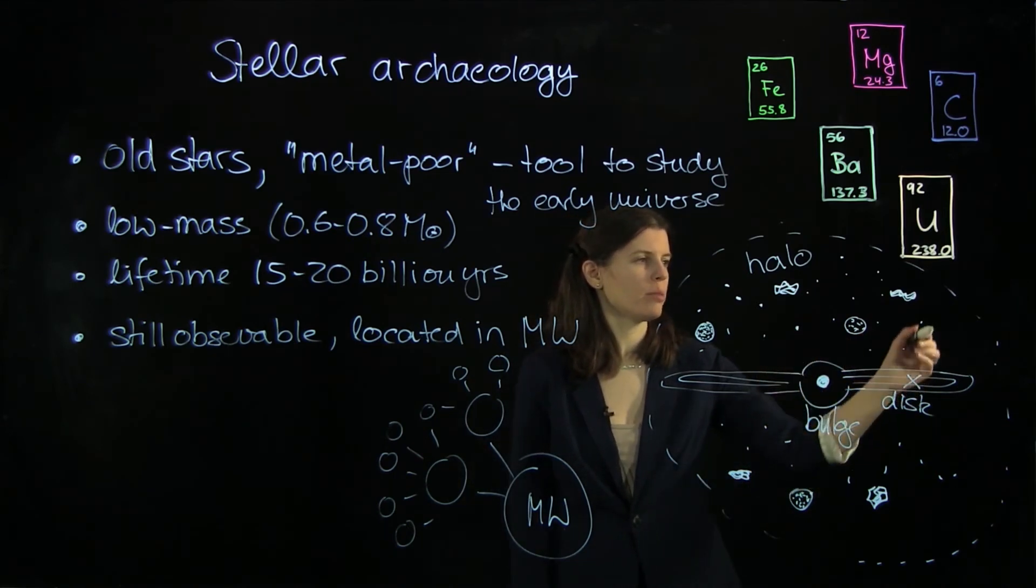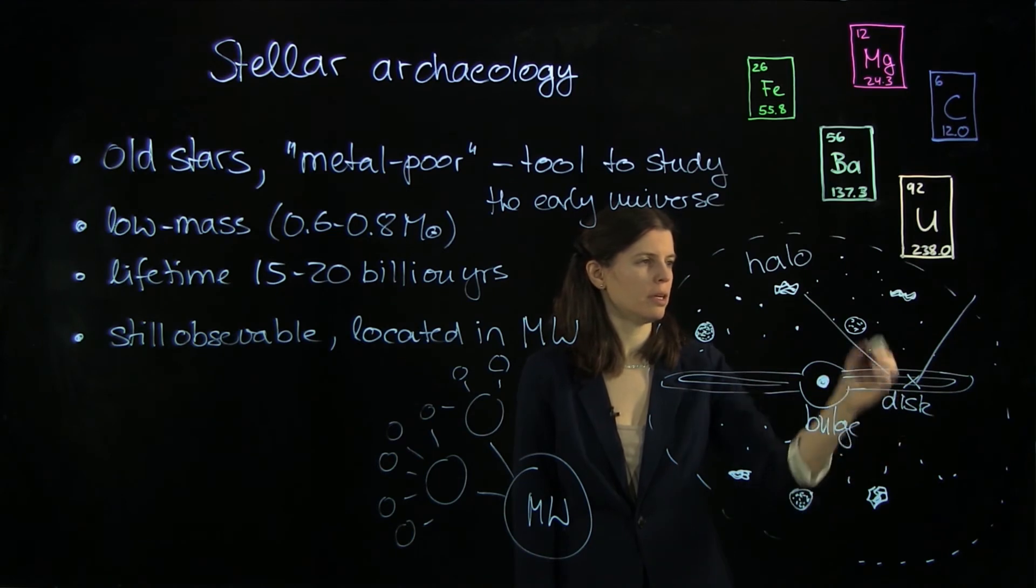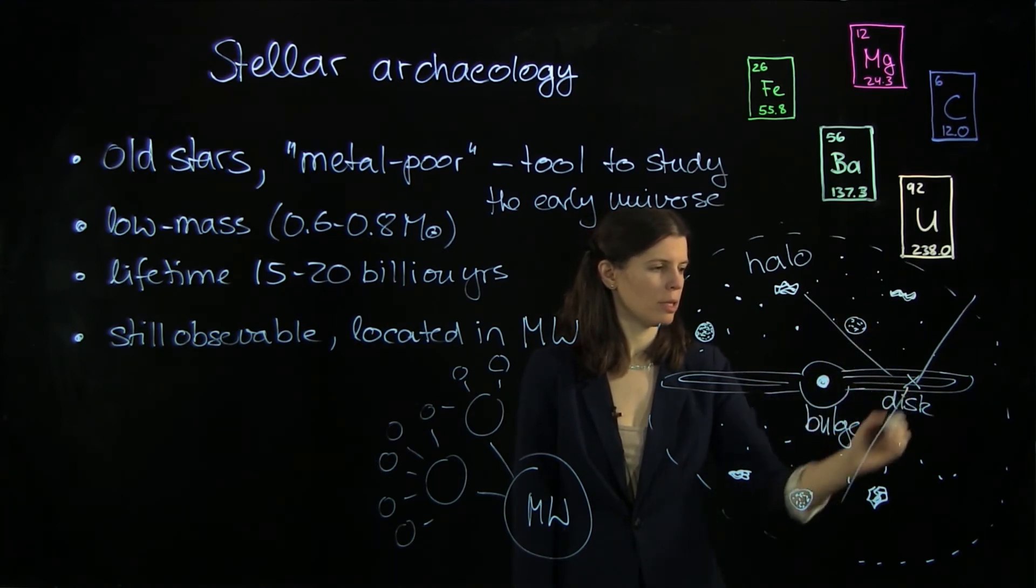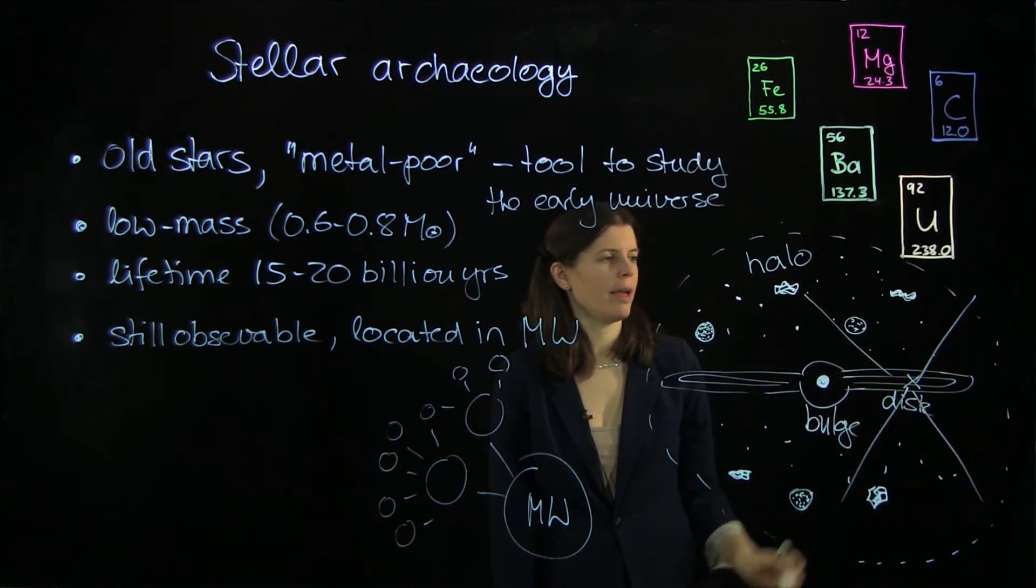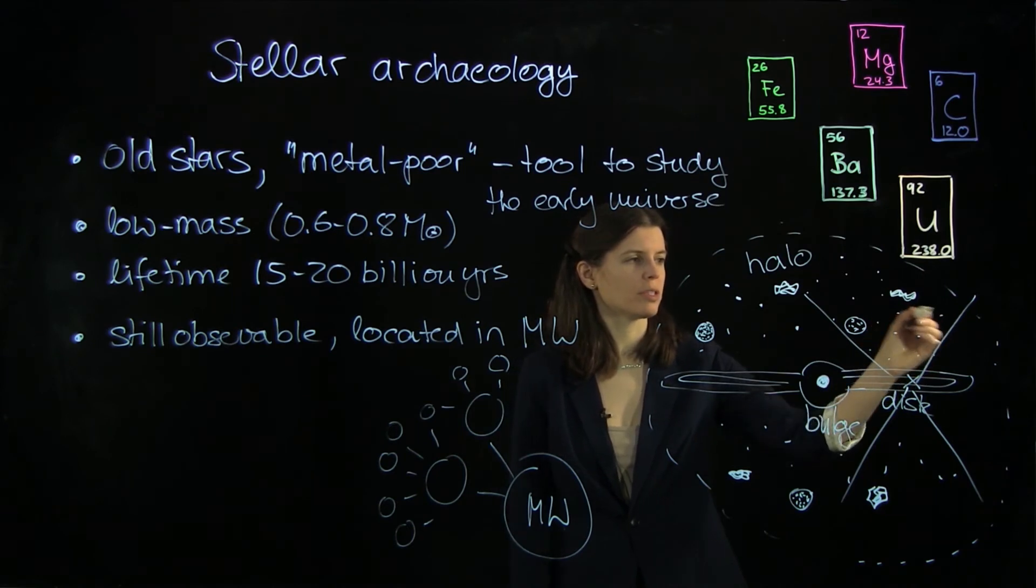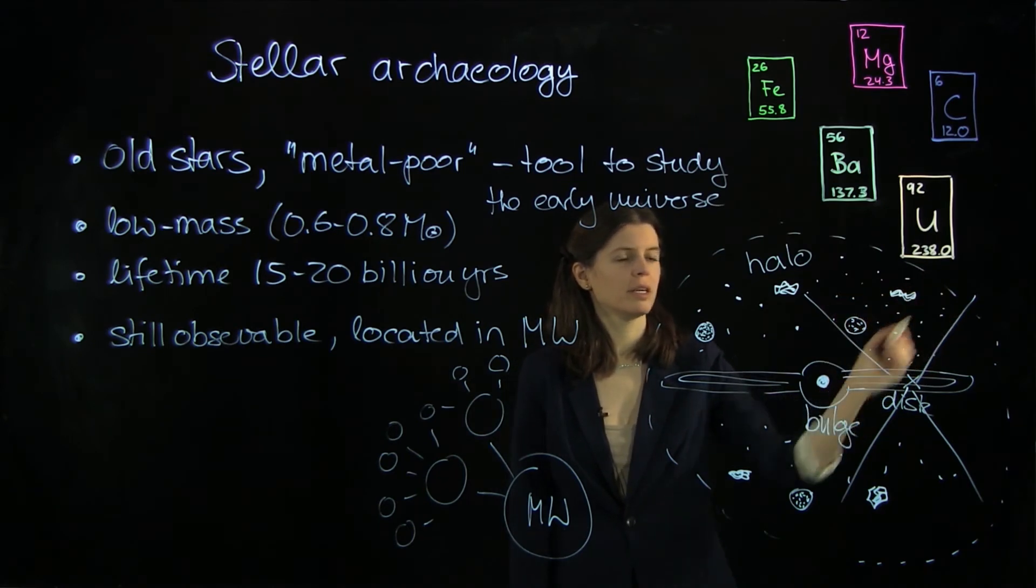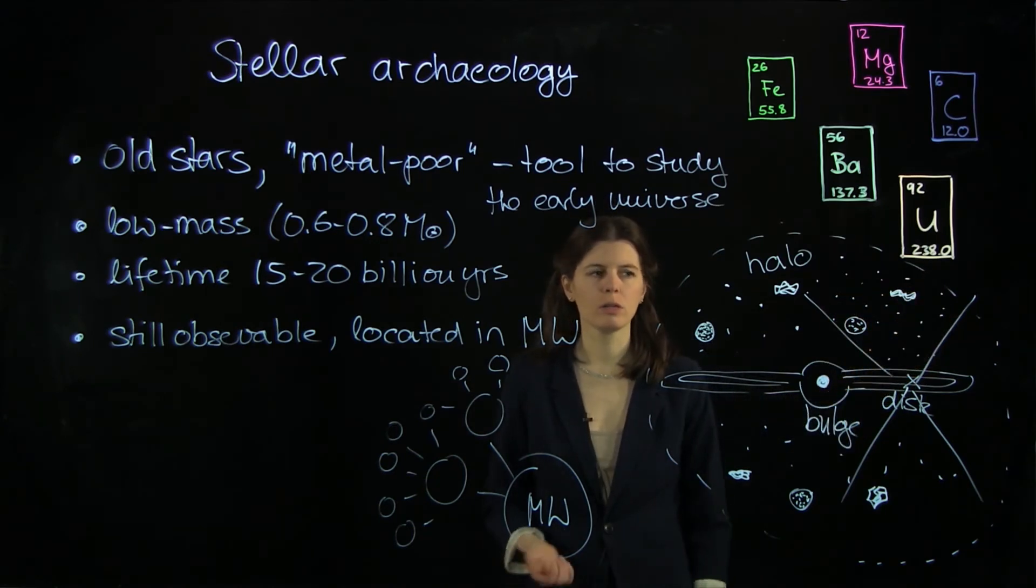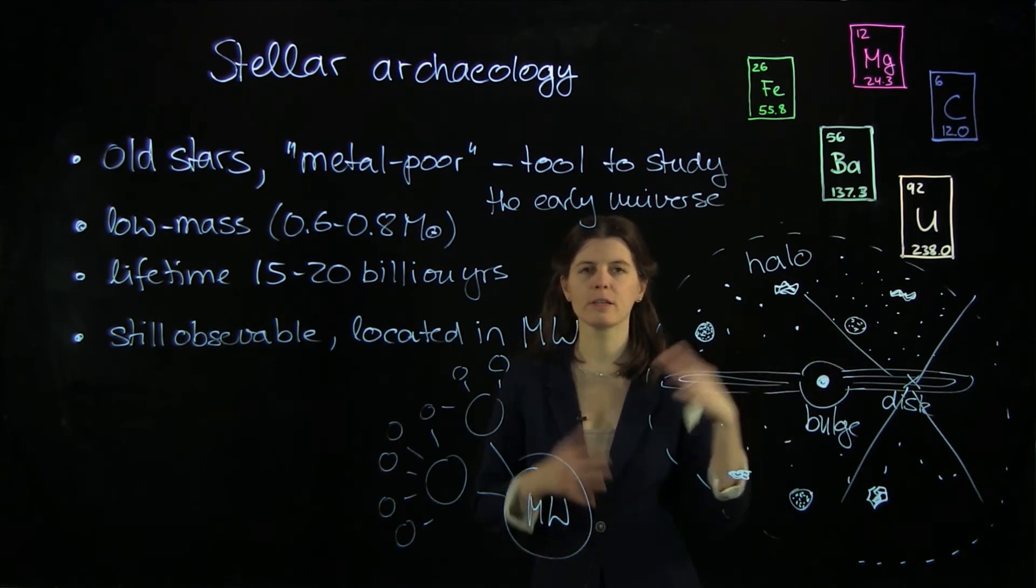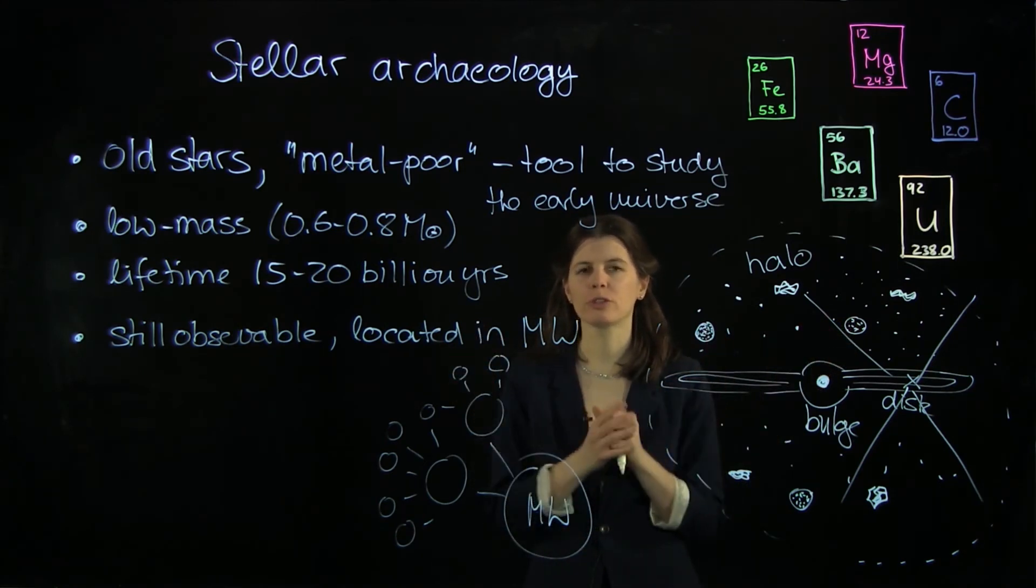And so with our telescope, we can peek from here, kind of here, up into the halo, and down here, and observe all the old stars that are in this range. So all in all, our metal-poor stars are the local equivalent to what we call the high redshift universe.